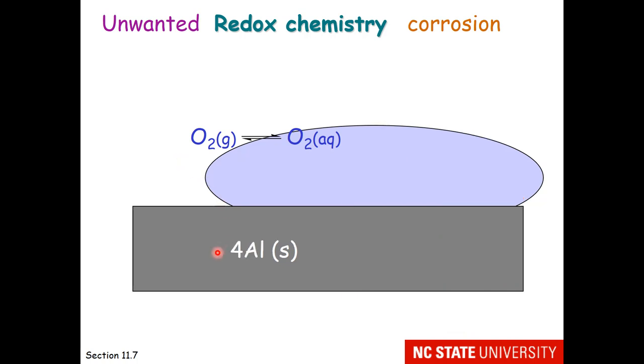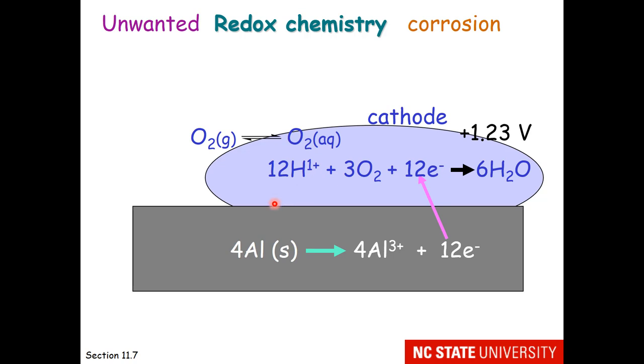This is why many outdoor things like lawn chairs and umbrellas are made of aluminum. The same redox reaction does happen. Perhaps you've seen old aluminum that's been outside for a while, and it kind of has a bit of a white, crusty material on it. Redox has been happening. This time I'm going to use three times the reduction reaction. It's the same one as before, where we have oxygen making water in the presence of acid, which serves as a great cathode at plus 1.23 volts. Aluminum is an excellent anode.